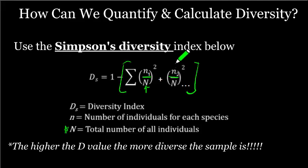The dots are there to show you that you're going to continue that on. If you find a hundred different species, you're going to go all the way to n₁₀₀. If you find five different species, which is our example here, we'll go to n₅. The higher the D value, the more diverse the sample is. When comparing two samples, the higher diversity score, the more diverse the sample.